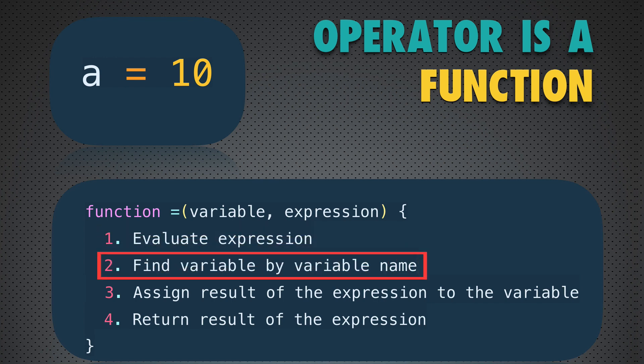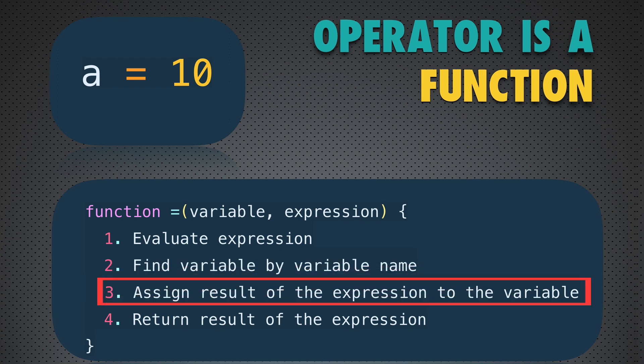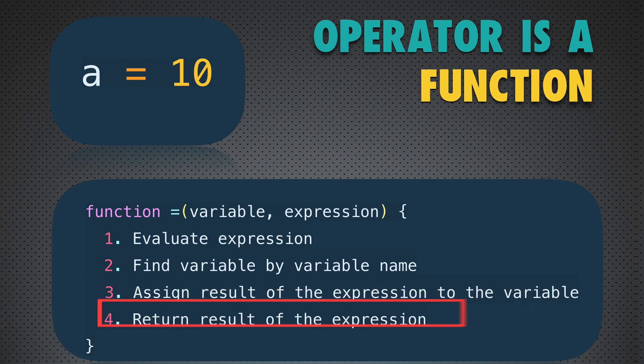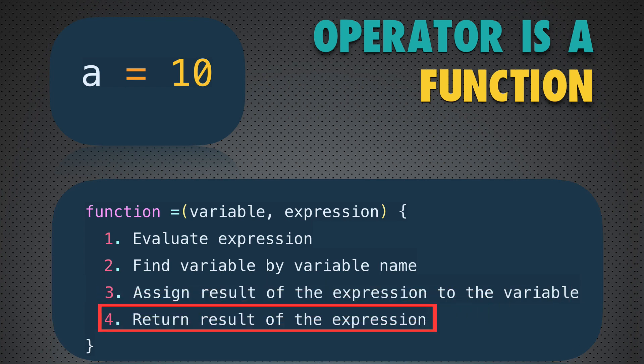Next, the engine tries to find the variable by its name, looking for it in the scope where the assignment operator is used. If it is not found in that scope, it looks in the outer scope. If the variable is found, the result of the expression is assigned to it. Finally, this assignment function returns the result of the expression. If you try to declare such a function in code you would get multiple errors — we used words here to express what happens when you use the assignment operator.